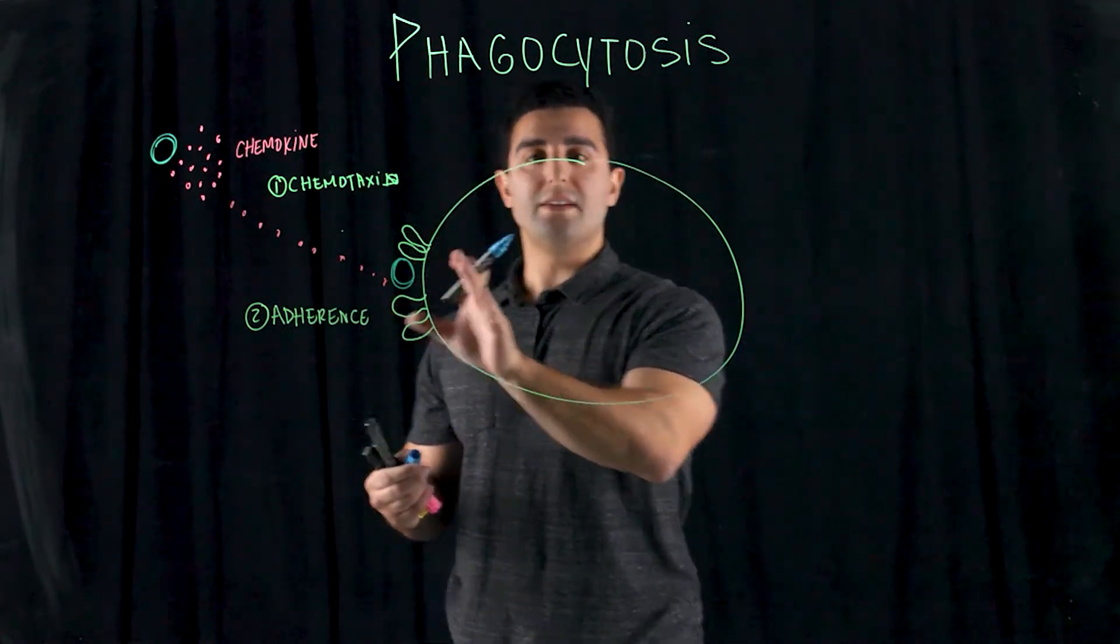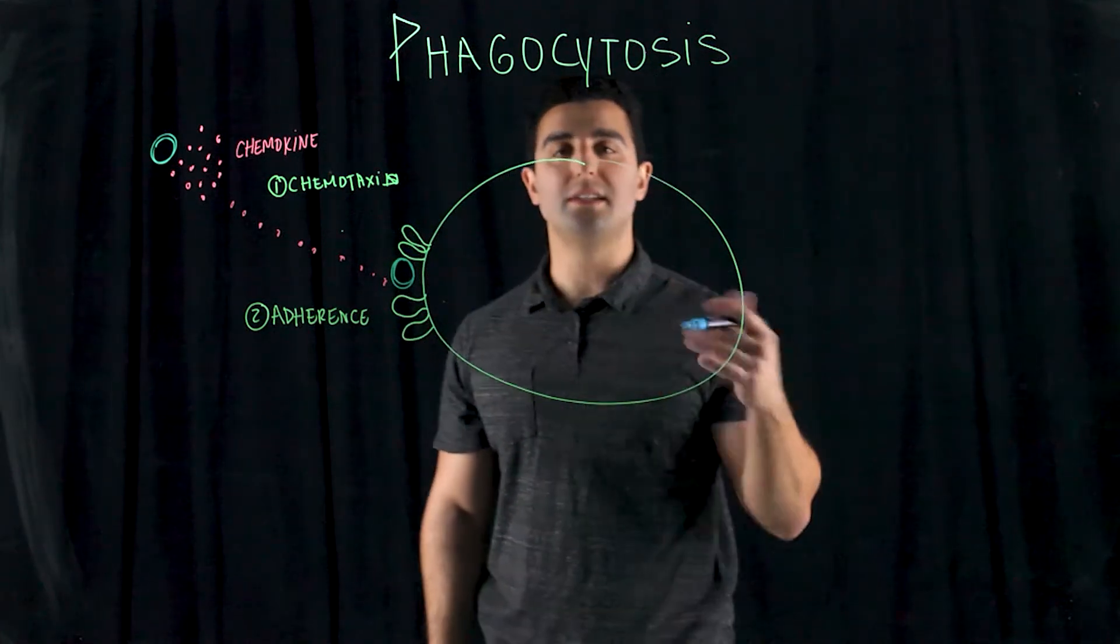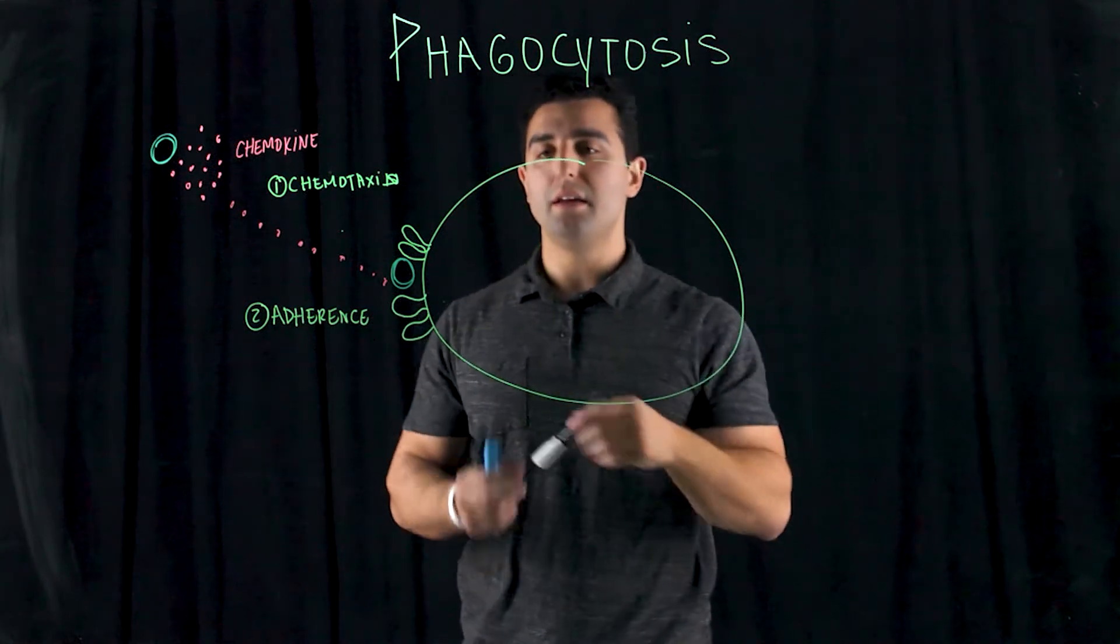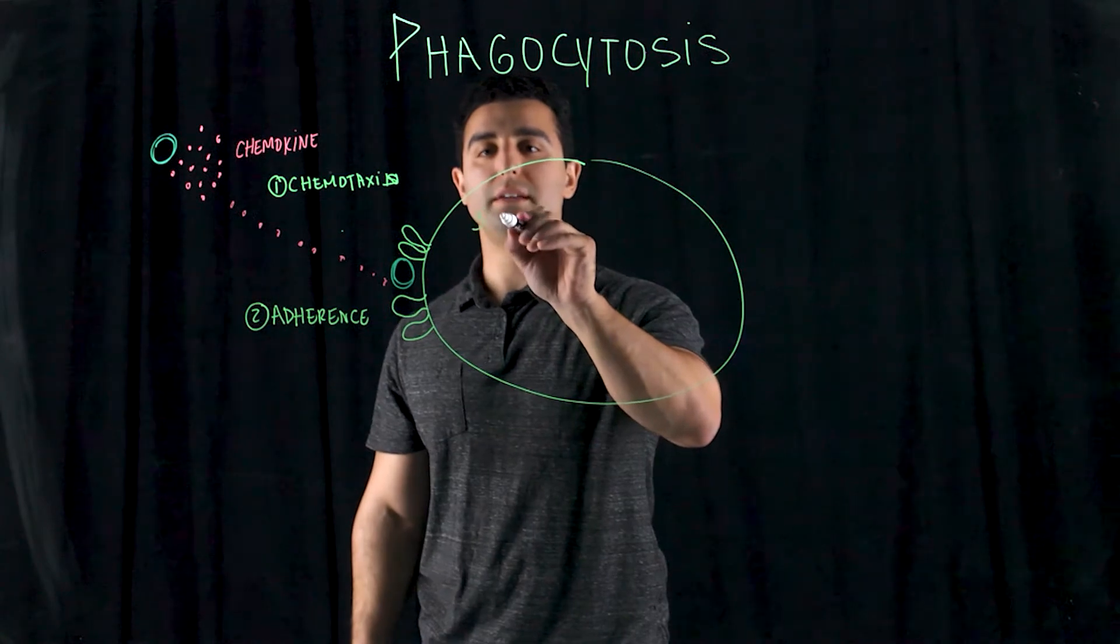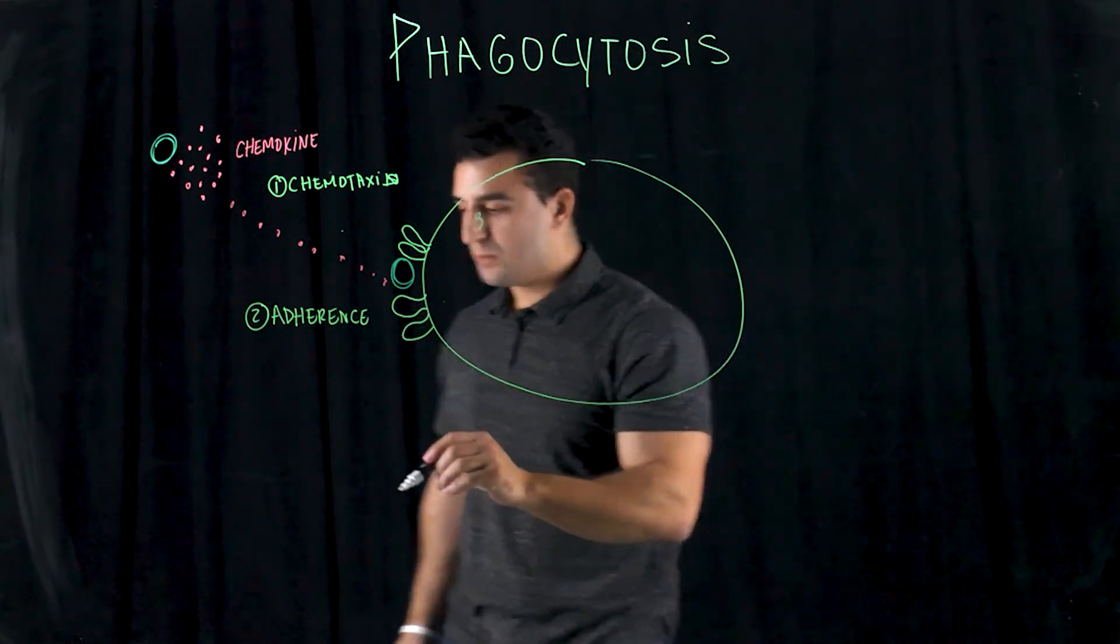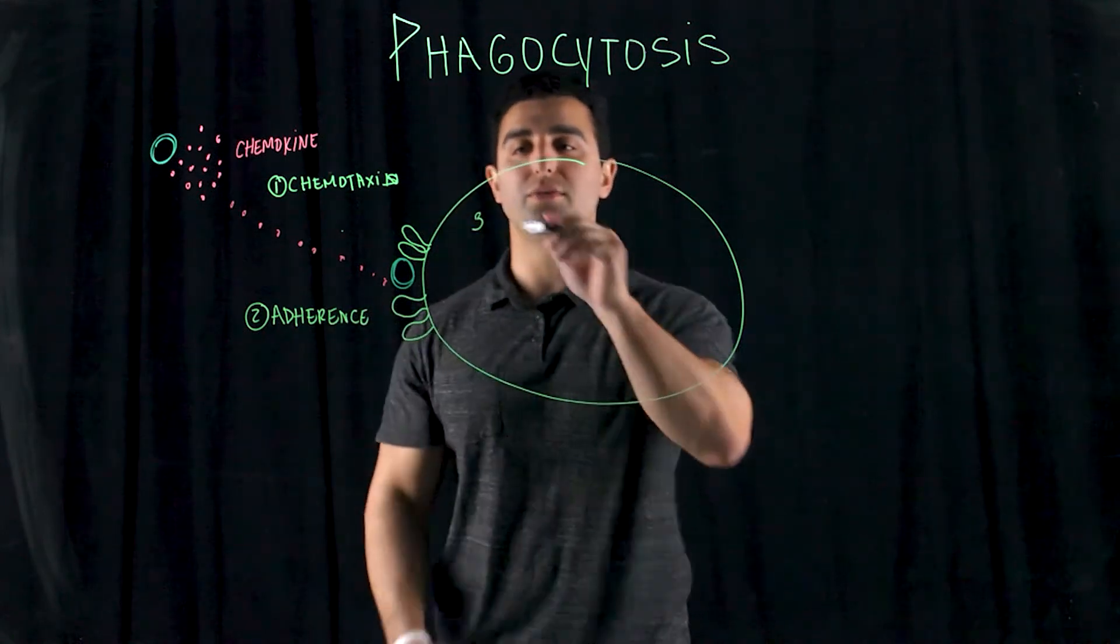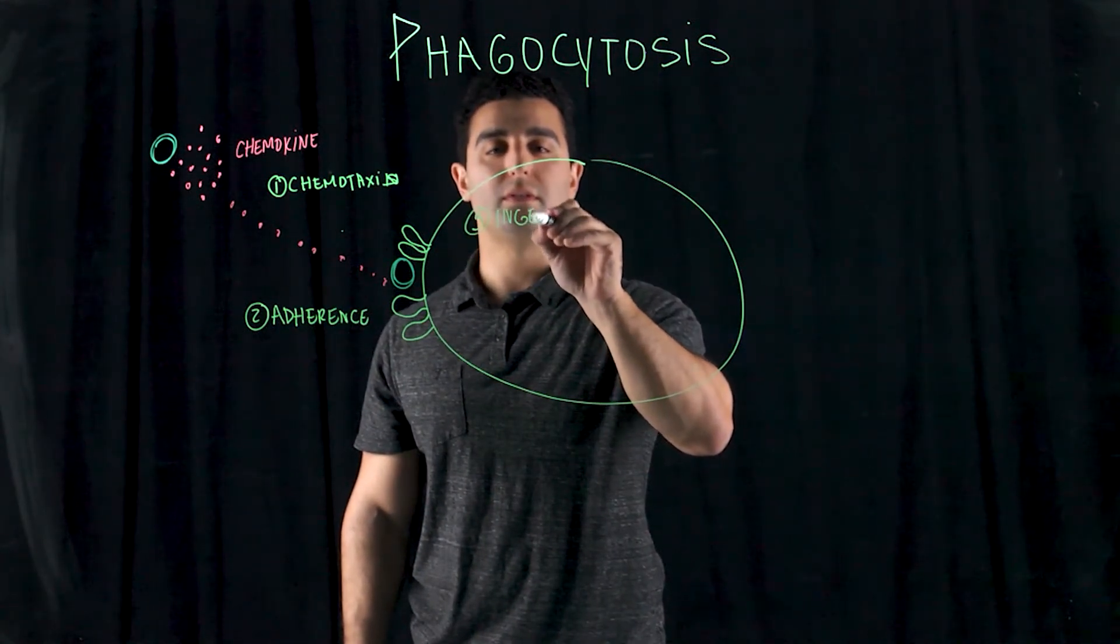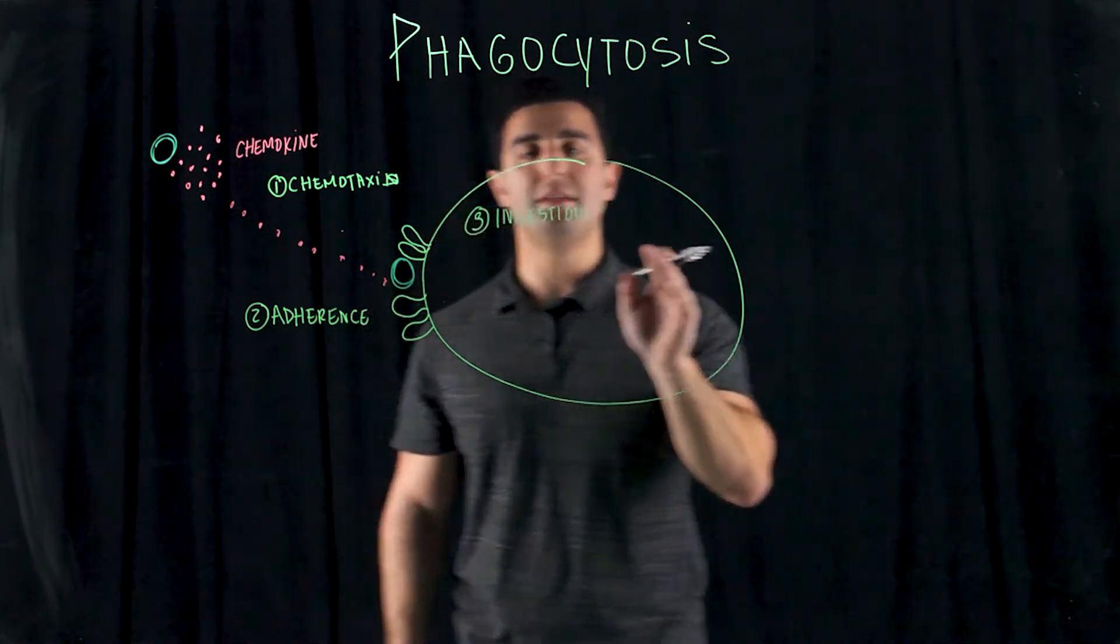...the phagocyte engulfs it through the process of endocytosis. Endocytosis then brings it in and begins the process of digestion. So before digestion, we have to ingest it. So the third process is ingestion. So they ingest it, so endocytosis, everything comes in.